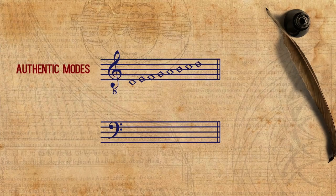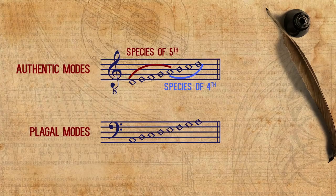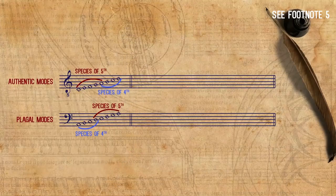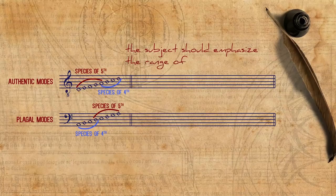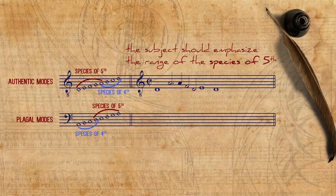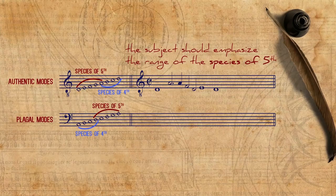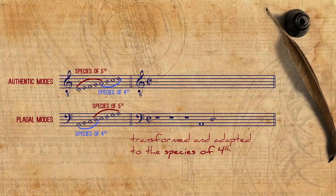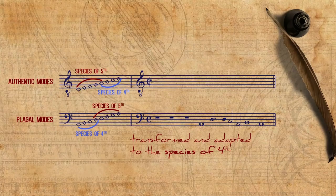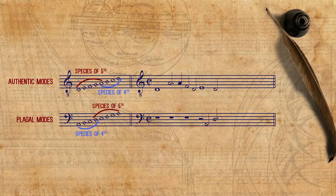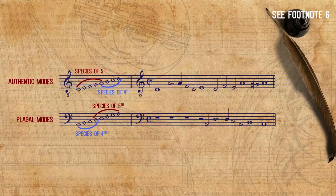On the basis that authentic modes are built with the species of fifth and then fourth, and plagal modes are built with the species of fourth and then fifth, Diruta gives help in composing or improvising imitations. If we are in an authentic mode, the subject should emphasize the range of the species of fifth. But then its answer, often made by the plagal neighboring voice, would be transformed and adapted to the species of fourth. You will find some nice polyphonic examples of this in the footnote.